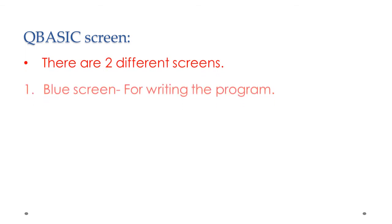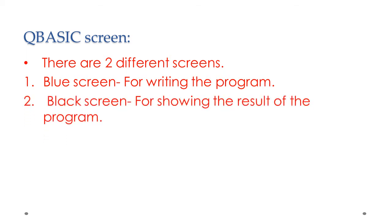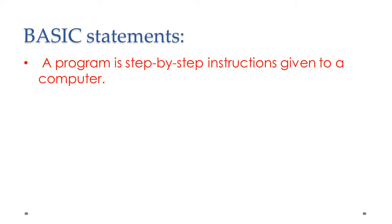Next is the QBasic screen. When you download and open QBasic, you will get a blue color screen. In QBasic there are two different screens. The blue screen is the first screen you see, and it is used to write the program. For example, if you want to write an addition-of-two-numbers program, you write it in the blue screen. After compilation, you will get a black color screen, which is used to display the output or result.